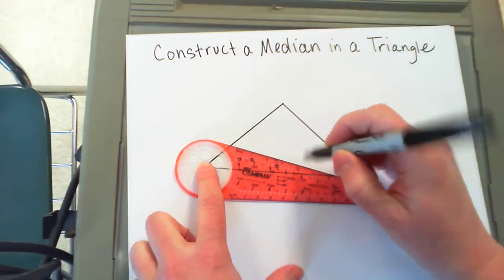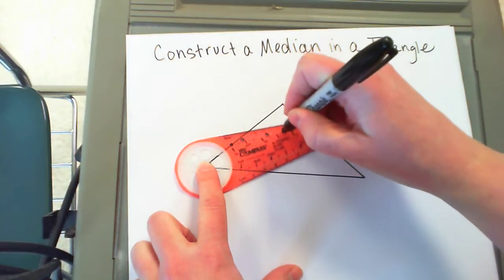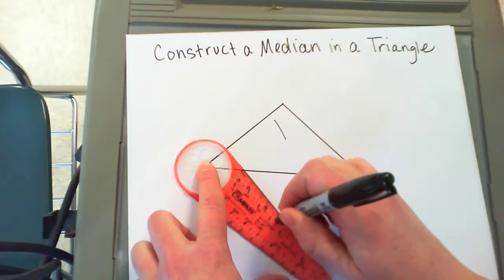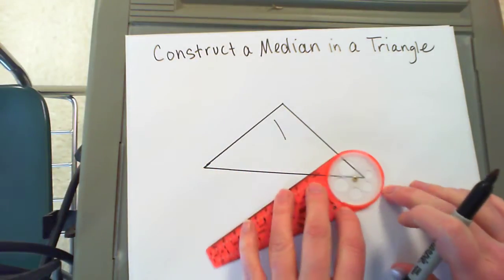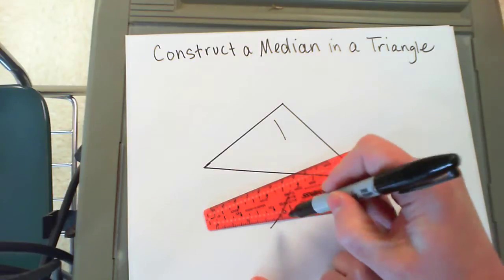You make that arch above and below that side, and then you go to the other endpoint of that side or the vertex of your triangle using the same size arches.